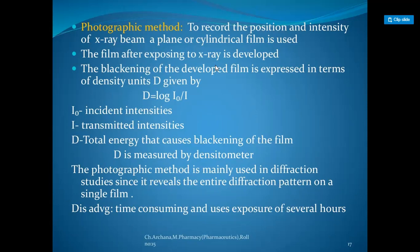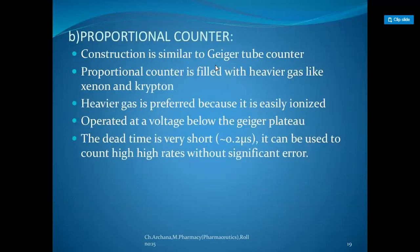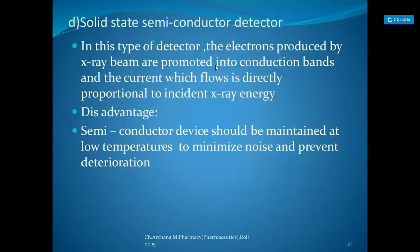The Geiger-Müller tube counter is filled with an inert gas like argon. The central wire anode is maintained at a positive potential of 800 to 2500 volts. Electrons are accelerated by the potential gradient and cause ionization of a large number of argon atoms, resulting in production of a cascade of electrons traveling towards the central anode.